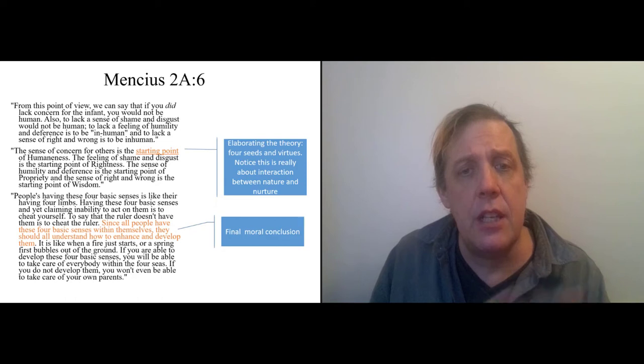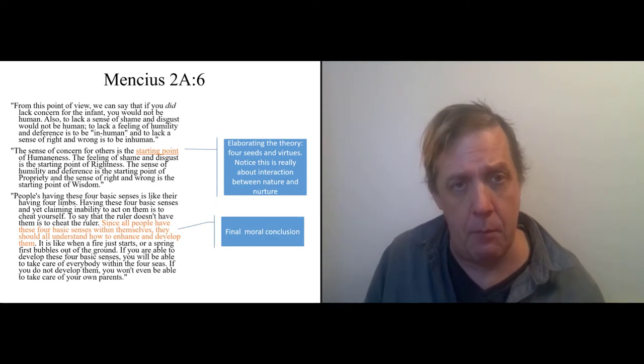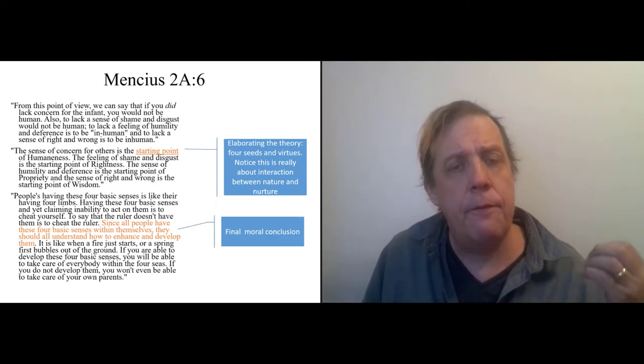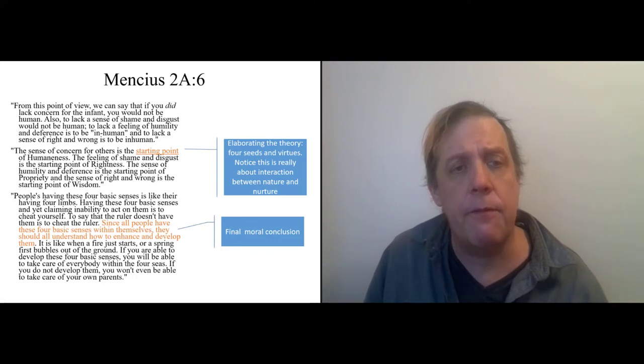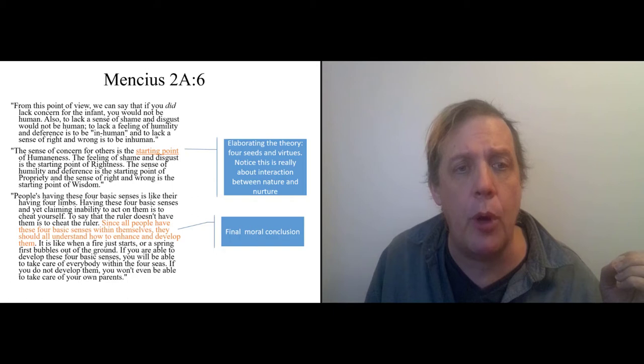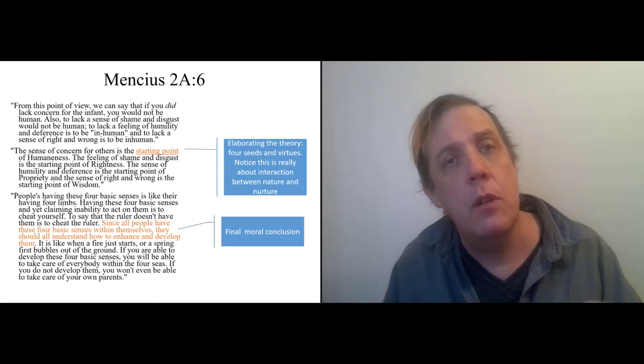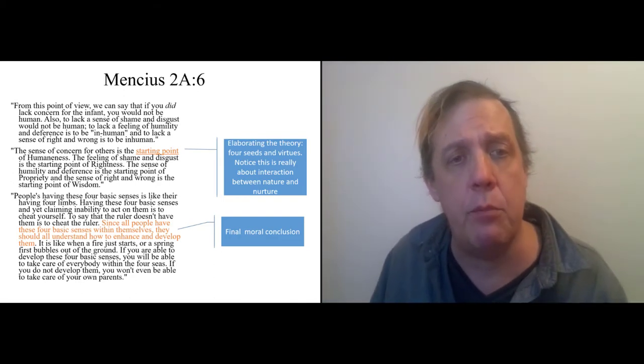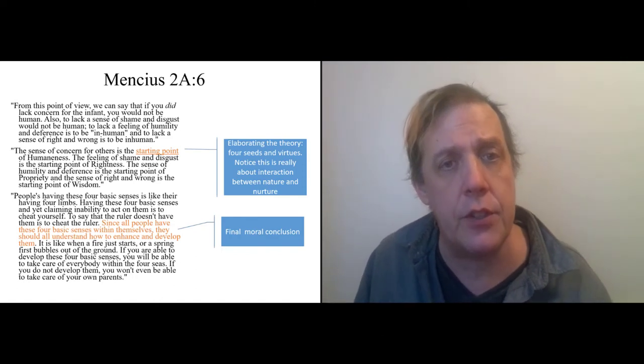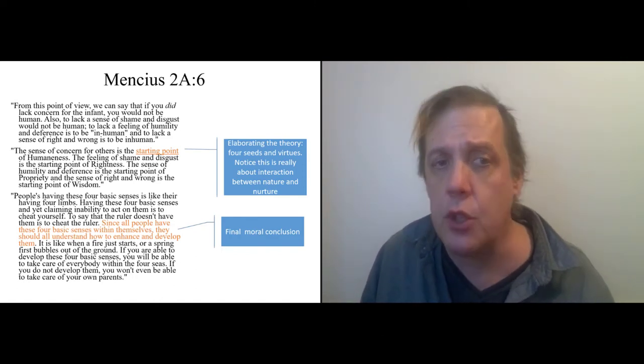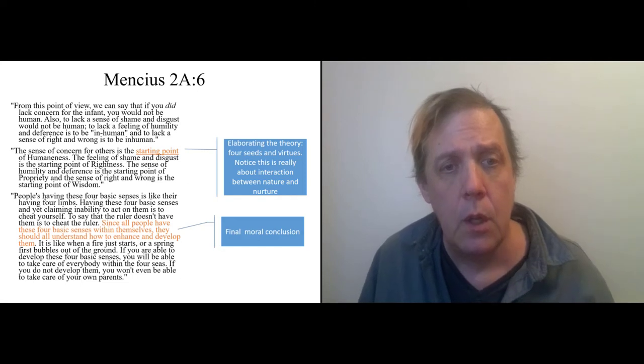This sense of concern for others is the starting point of humaneness. And the word humaneness there is Ren again, goodness, benevolence, sympathy. And so actually he's got an elaborate theory. There are four seeds that everyone has inside of them. Concern for others is the starting point of humaneness, a feeling of shame and disgust is the starting point of rightness. A sense of humility is the starting point of propriety. That's filial propriety. And a sense of right and wrong was the starting point of wisdom. Within us we have all the starting points we need for goodness. And if you didn't have these, you wouldn't be human.